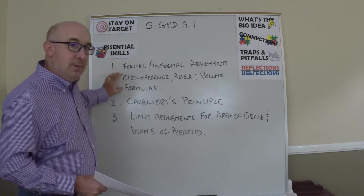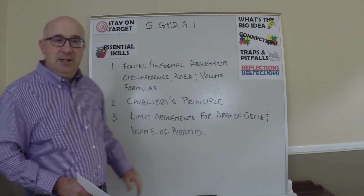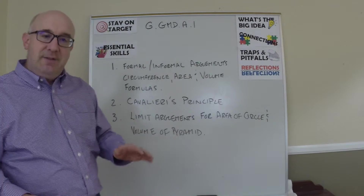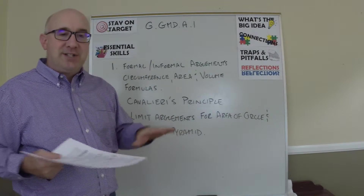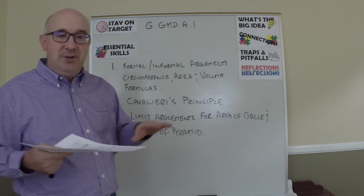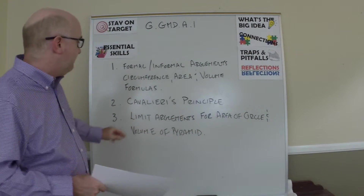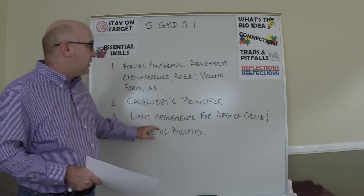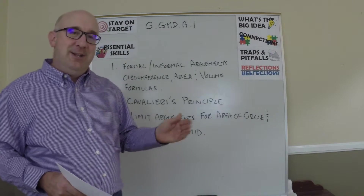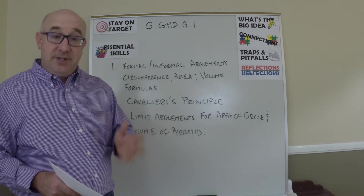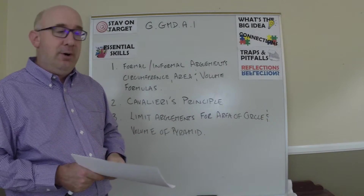So we look at the development of formulas, then we move to Cavalieri's principle, which states that if two solids have the same height and their cross-section values are equal across that same height, then they have the same volume. We also look at the limit argument heading towards the area of a circle and the volume of a pyramid.